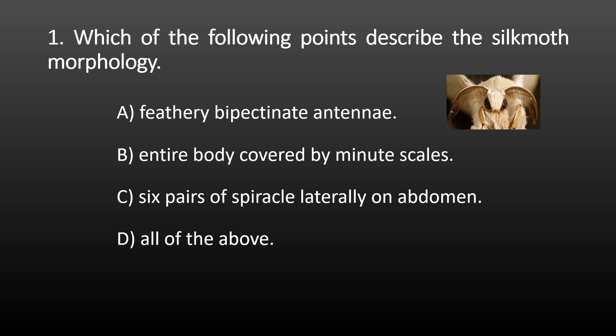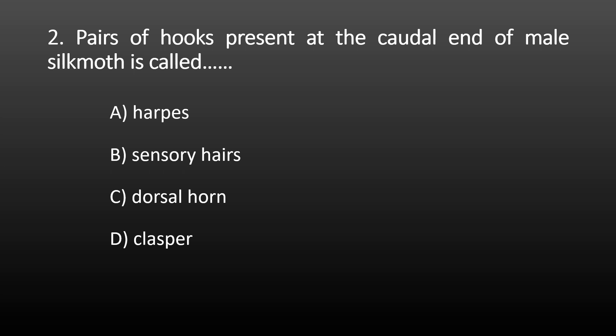This is the first MCQ: which of the following points describes the silk moth morphology? The options are: A) feathery bipectinate antennae, B) entire body covered by minor scales, C) six pairs of spiracles laterally present on abdomen, and D) all of the above. All three options A, B, C are seen in silk moth. That's why the correct option is all of the above.